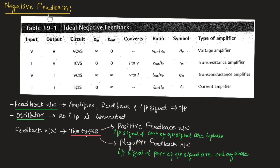In this module, we will study the negative feedback network. There are four types. The first type has voltage as input and voltage as output. In such a negative feedback network, these are known as voltage controlled voltage source (VCVS) networks. In ideal conditions, input impedance is infinity and output impedance is zero. Practically, input impedance is very high and output impedance is very low. Since input and output are both voltage, the gain is represented as output voltage divided by input voltage, which is voltage gain.